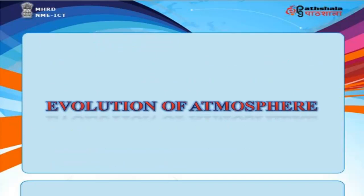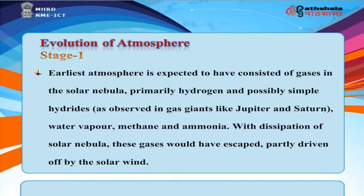Evolution of Atmosphere — Stage 1. The earliest atmosphere is expected to have consisted of gases in the solar nebula, primarily hydrogen and possibly simple hydrides, as observed in gas giants like Jupiter and Saturn, as well as water vapor, methane, and ammonia. With dissipation of the solar nebula, these gases would have partly escaped, driven off by the solar wind.